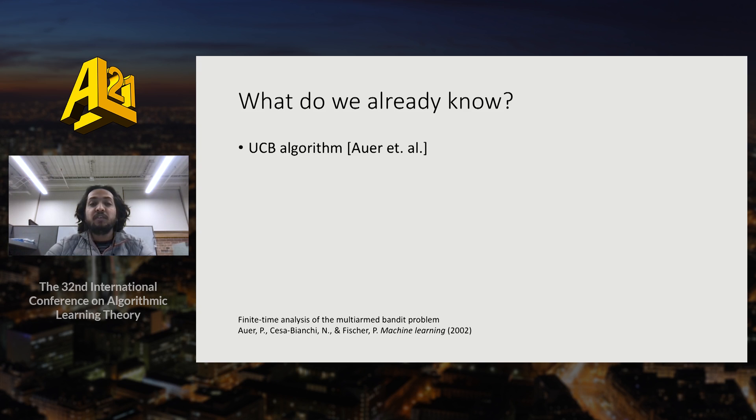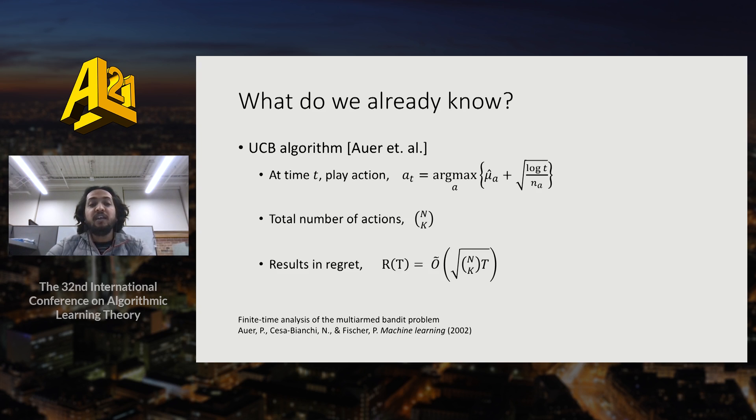We already know that we have an algorithm which plays the action which maximizes the current upper confidence bounds. For this algorithm, we will have N choose K actions and the regret will be bounded as square root of N choose K times t. Not only is the regret exponential in number of arms, the space complexity to store all these actions and their rewards is also exponential, and at each time t, the agent needs to perform a linear search on all the actions which is again exponential order.